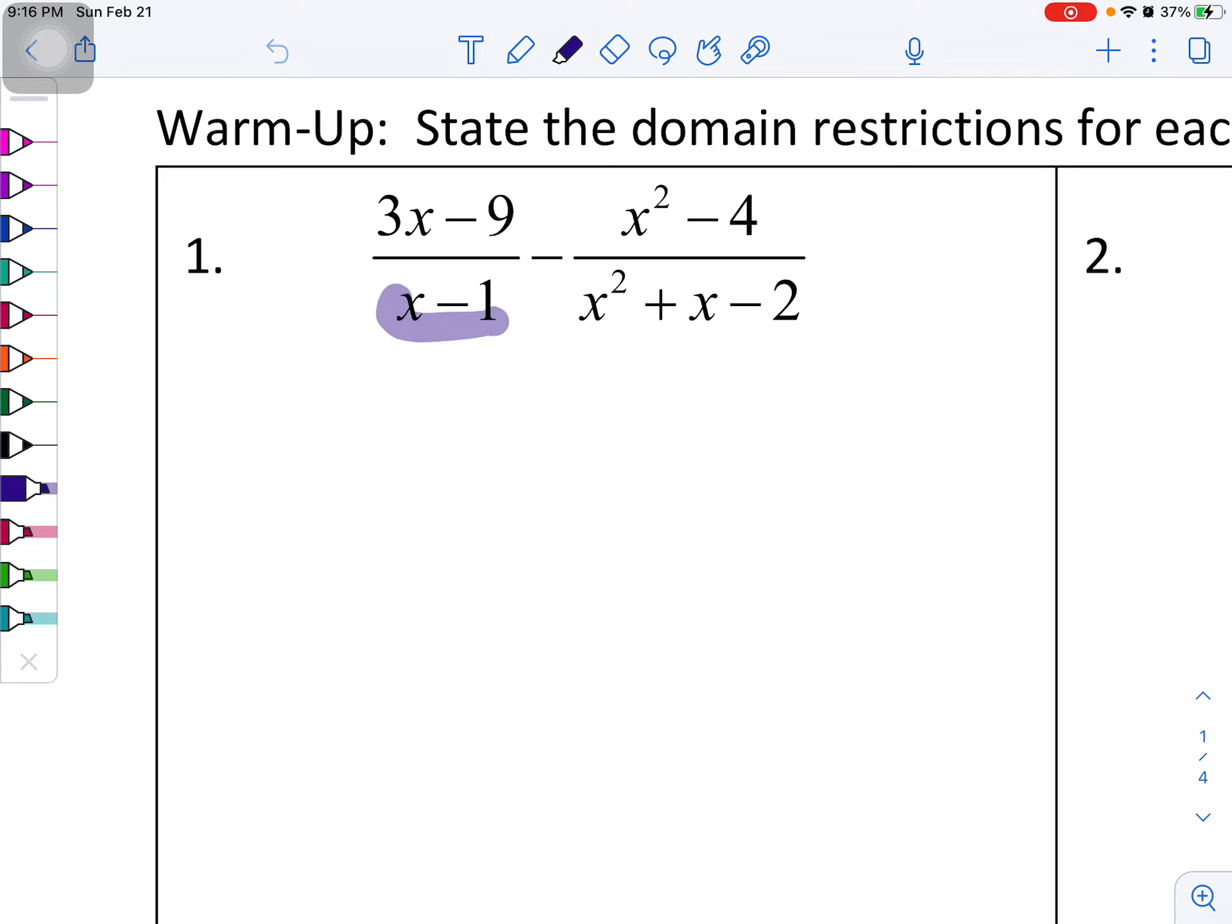Let's zoom in on number one. When we talk about domain restrictions, we want to know what is going to make our denominator equal to zero. So I am purposely going to set my denominators equal to zero. In this case, there's two of them, so each one gets its own equation and I'm going to solve these.